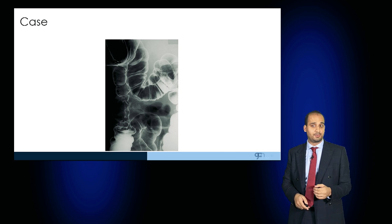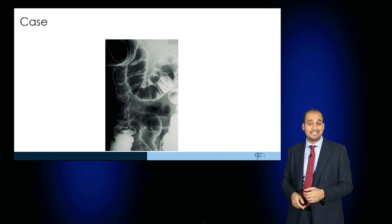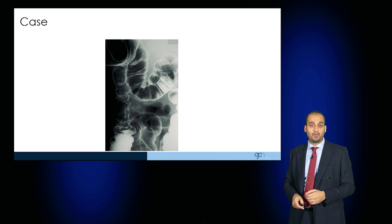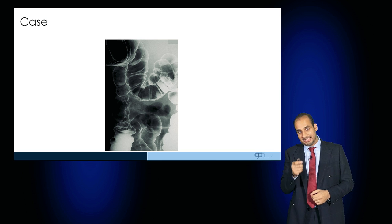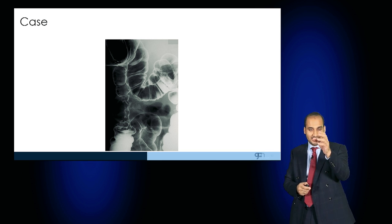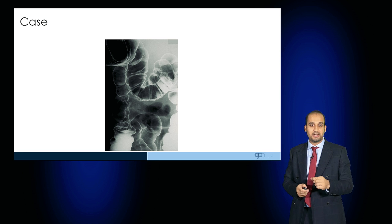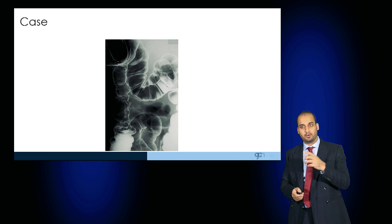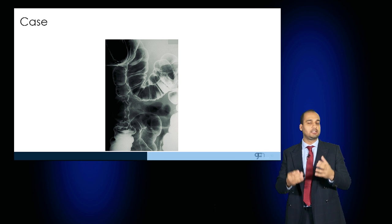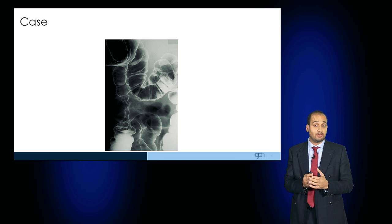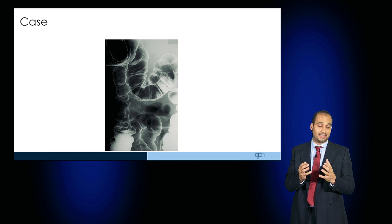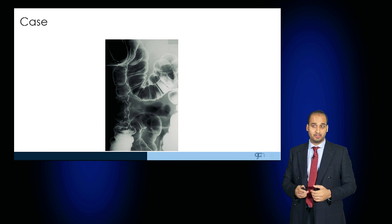Here's another double contrast CT. As the ascending colon ascends, there is a lesion in the middle which looks like an apple core — this is called an apple core lesion. And it's suggestive of a mural cancer, a bowel cancer.